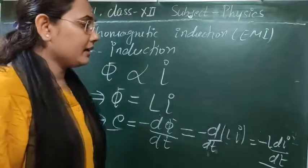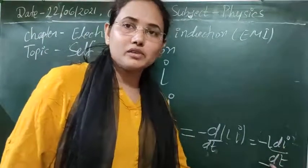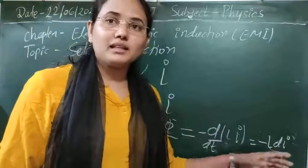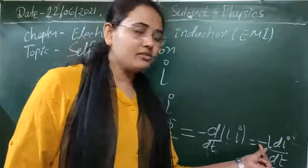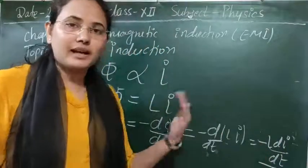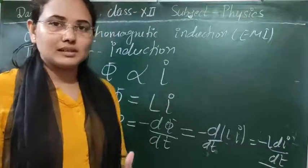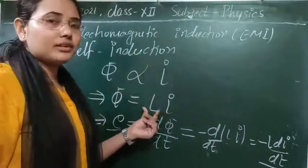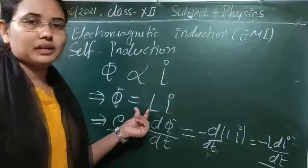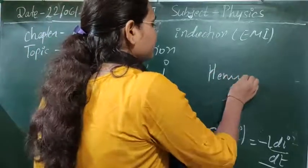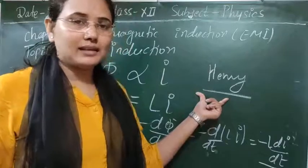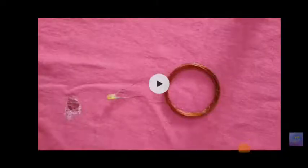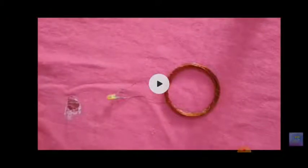From EMF = -L di/dt, the induced EMF is directly linked with the change in current. If current changes by a large amount, there will be a large induced EMF in the opposite direction — the negative sign tells us the induced EMF is generated in the opposite direction, giving rise to a current in opposite direction. The unit of self-induction L is expressed in henry, named in honor of the scientist Henry.